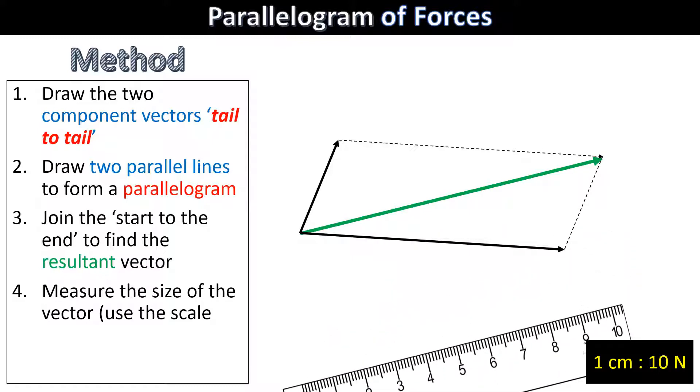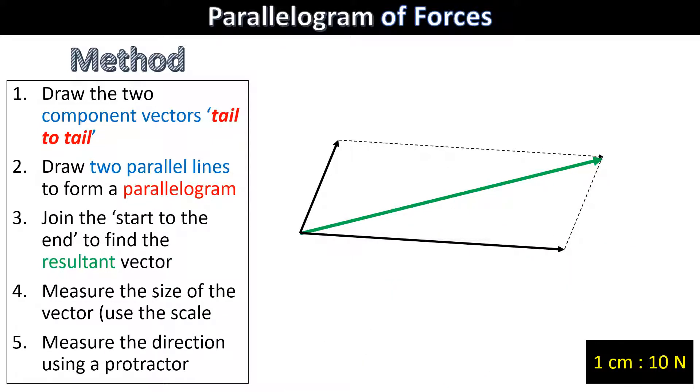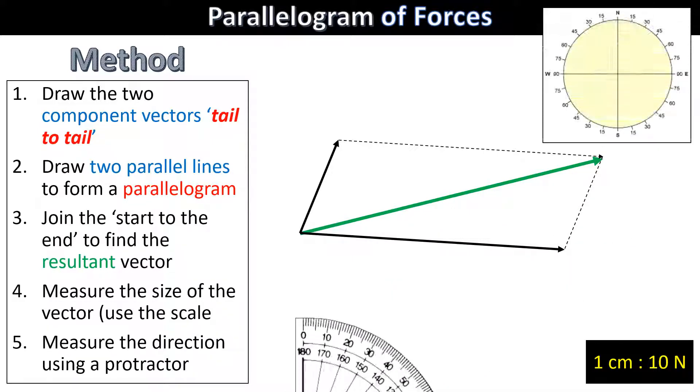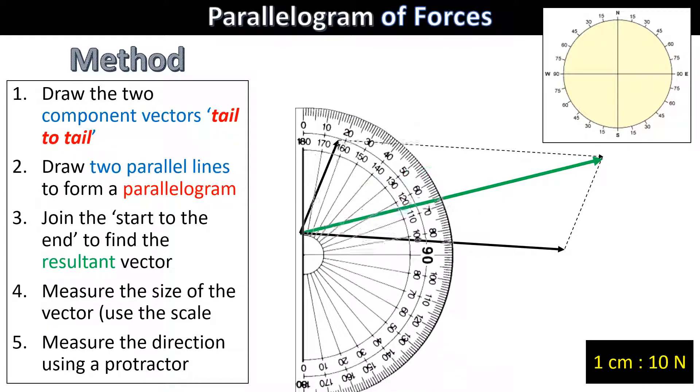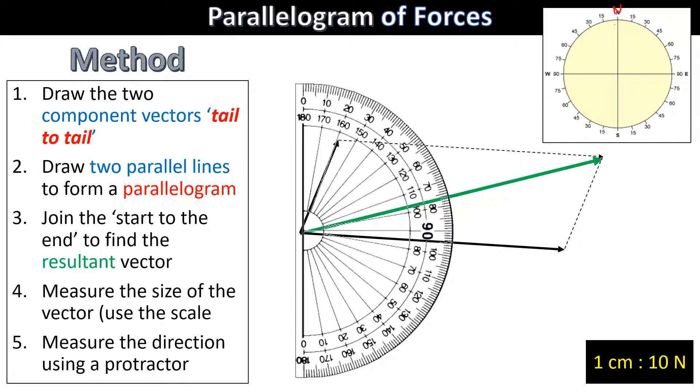To measure the direction, we're going to use a protractor. We're going to use a bearing system where north up here is 000 or 360 degrees. Here we have a bearing east of 90 degrees.